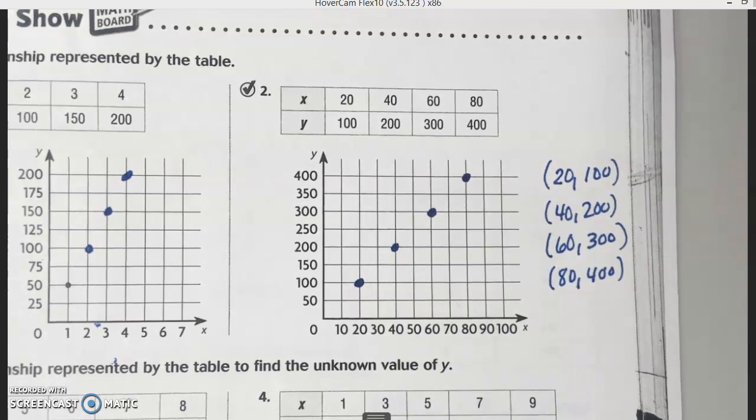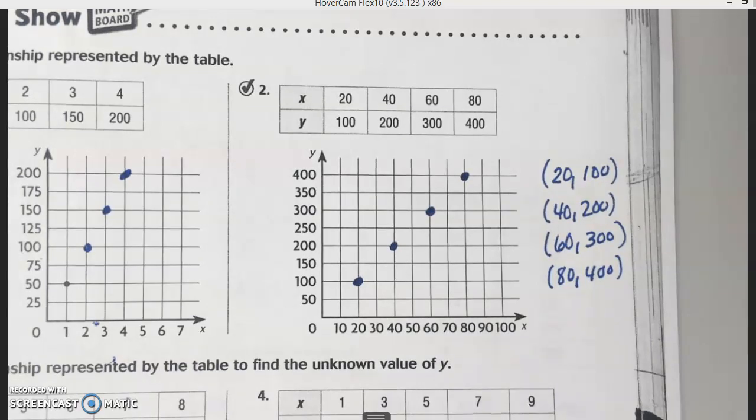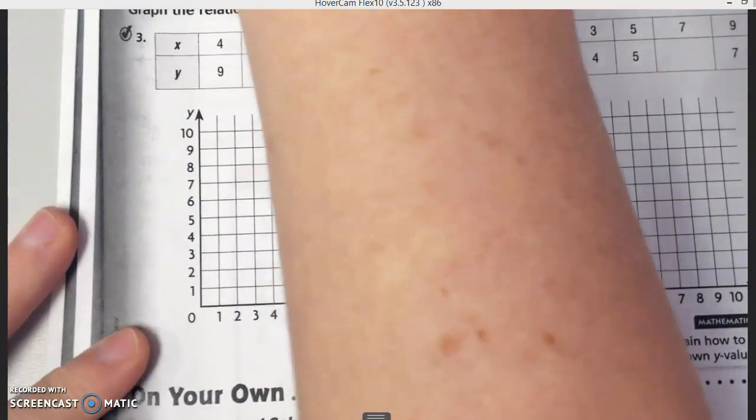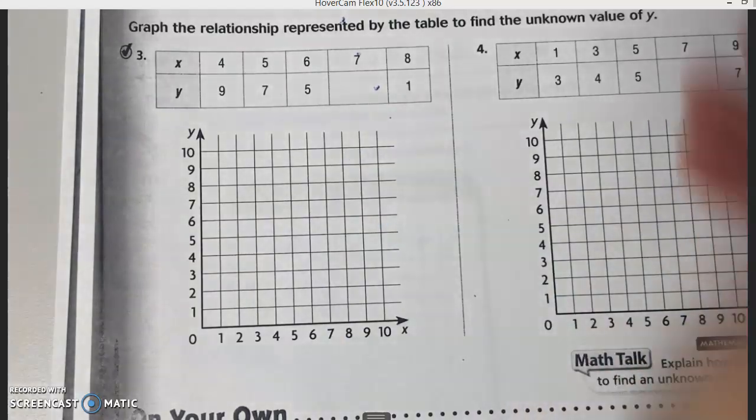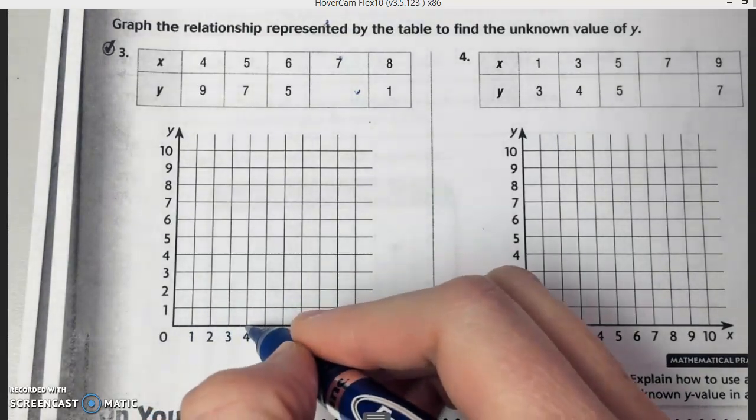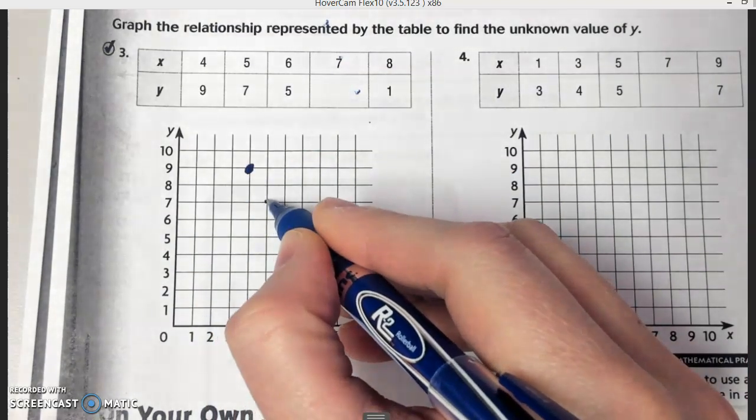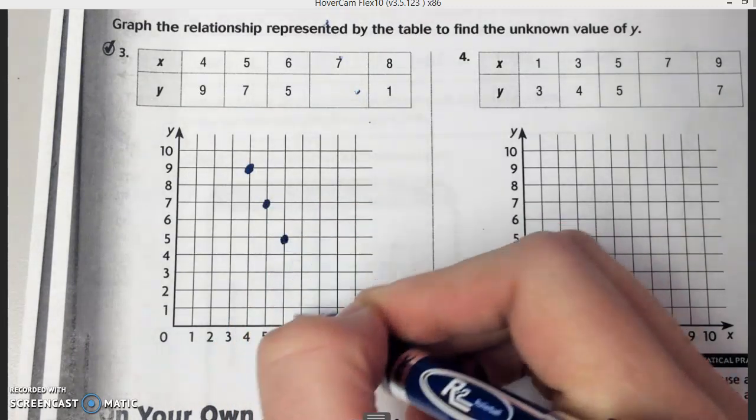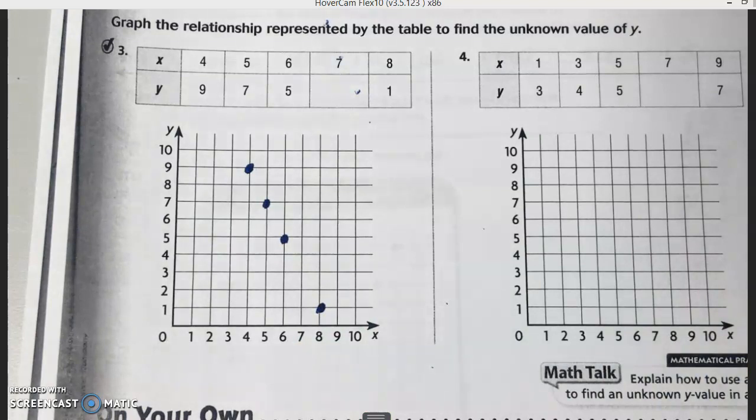Does anybody have a question about what we're doing here? Let me go over one more with you. On this one, we've got to graph the relationship and then find the unknown value. We have four and nine, then five and seven, then six and five, and then skip the seven and go to eight and one. Then this is where you want to draw the line.